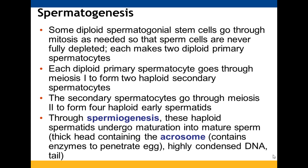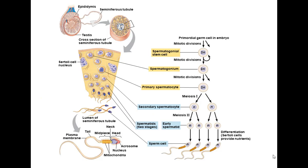Those early spermatocytes are not yet full-fledged mature sperm. They have to go through spermiogenesis — forming their acrosome, which is the thick head containing enzymes that allow penetration of the egg, getting their DNA condensed, and forming the tail so they can move their flagella. Not every spermatocyte will become a sperm, because some are going to continue through mitosis to keep plenty available.